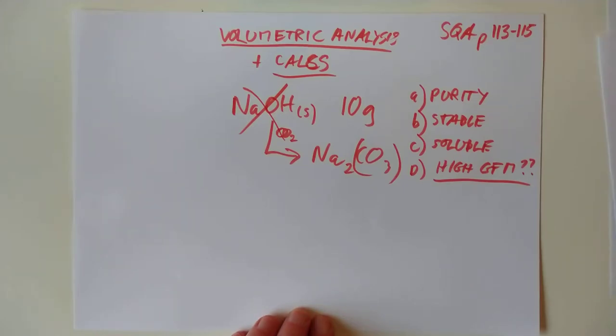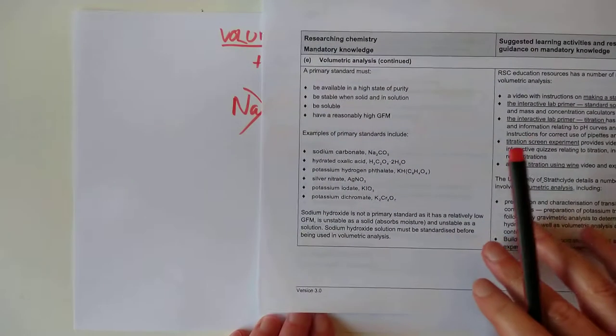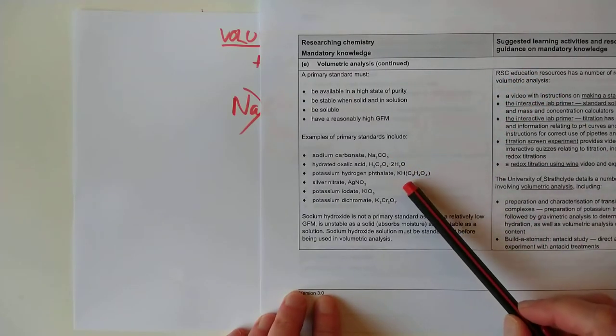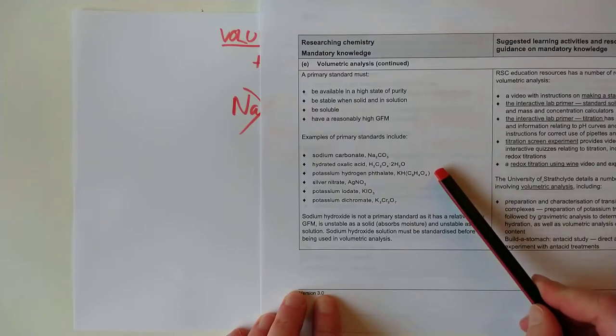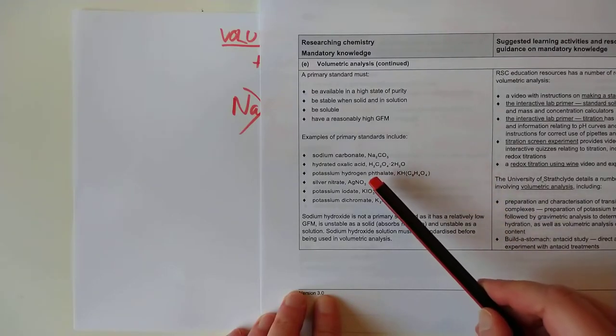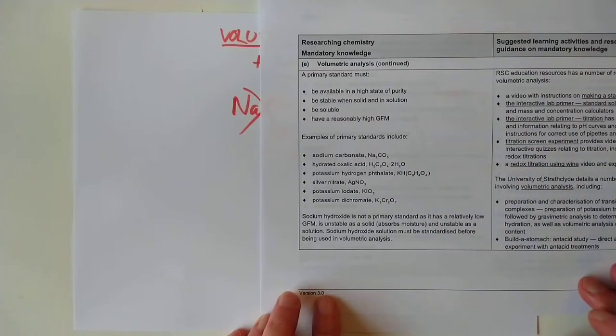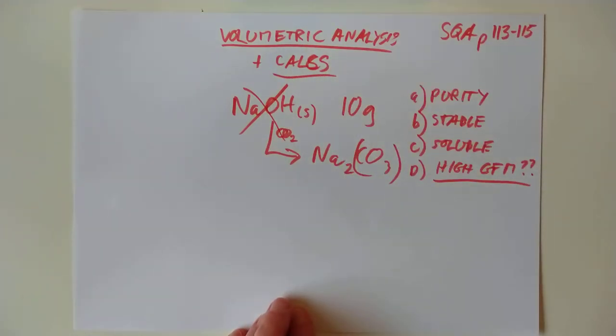Some examples are mentioned specifically in the outcomes, interestingly, are sodium carbonate, hydrated oxalic acid, potassium hydrogen phthalate. Good chance to look that one up. Silver nitrate, yeah, that's handy. Potassium iodate and potassium dichromate.